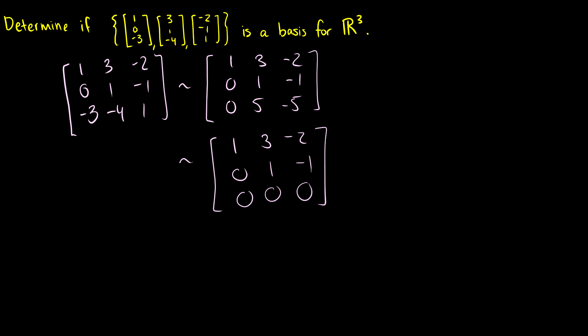We can see that vectors v1, v2, and v3 are not linearly independent. In fact, we can rewrite v3 as equal to v1 minus v2. So this is not a basis because it does not span all of R3.